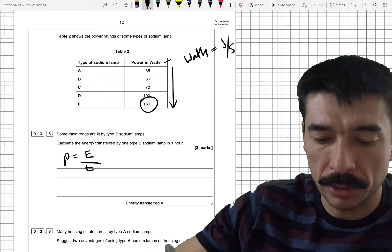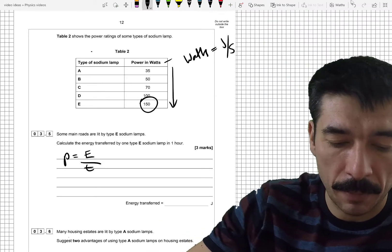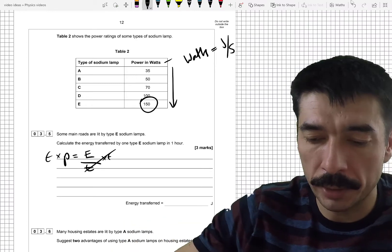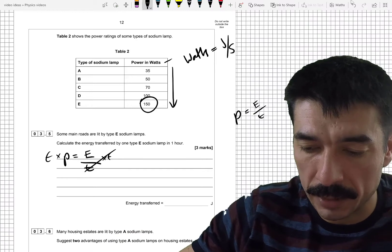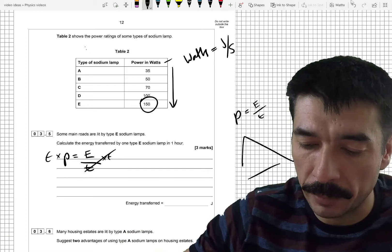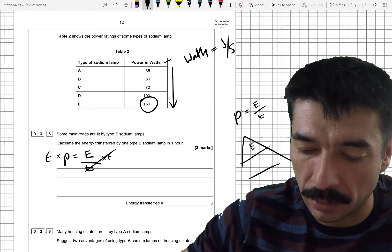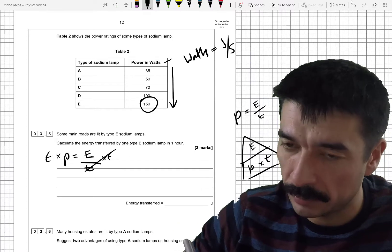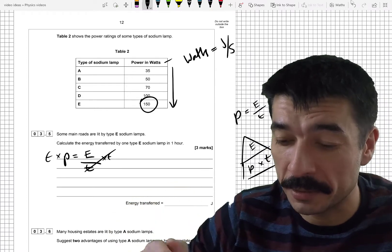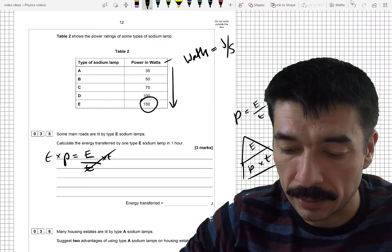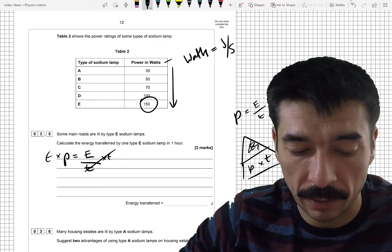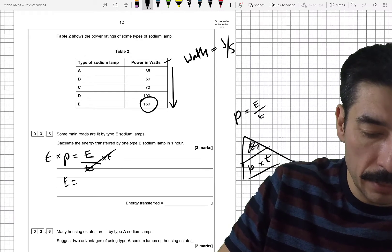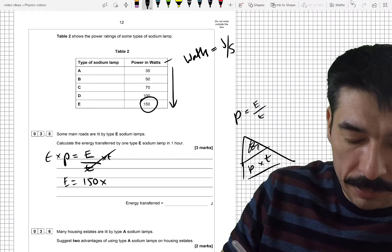So, power is equal to energy used divided by time, or energy transferred divided by the time. If you want to work out the energy, well, you could do one of two things. You can either multiply both sides by time, cancelling the time on this side, or you could take the equation that you've remembered, power equals energy divided by time, and stick it into a formula triangle. The E is on top of division, so it goes on top, and P and T will be on the bottom. So, if you want to calculate the energy, you cover energy, and you're left with power times time. So, the energy will be equal to the power, 150 watts, times the time, one hour.